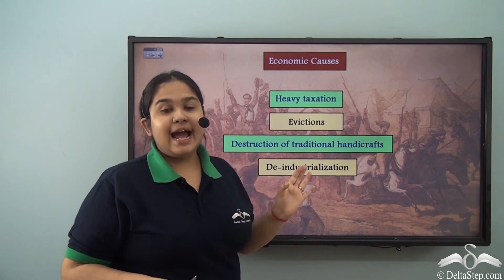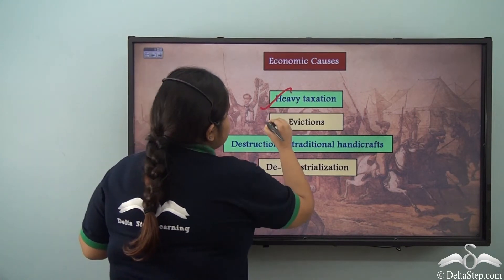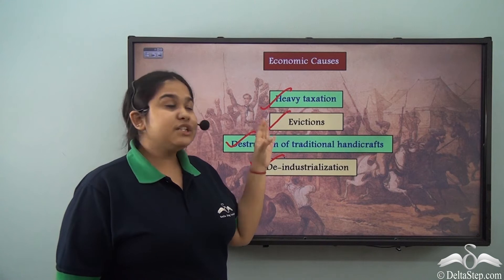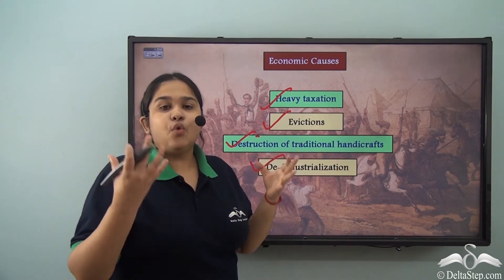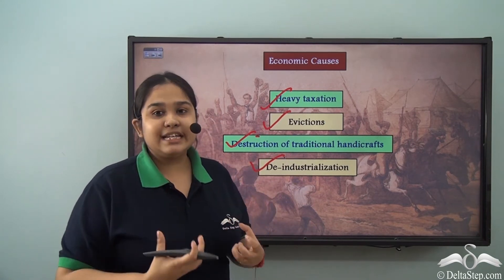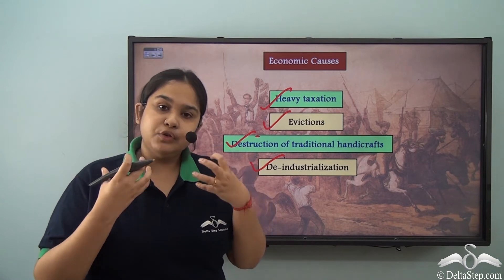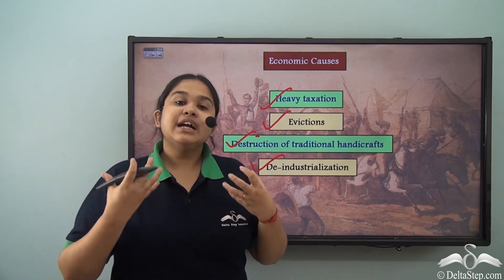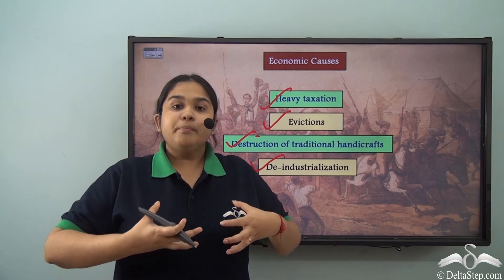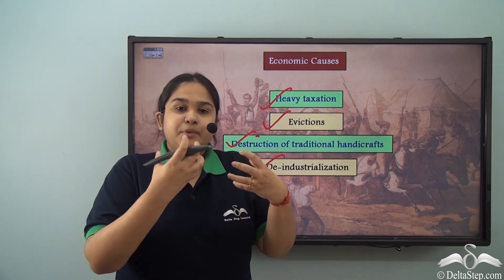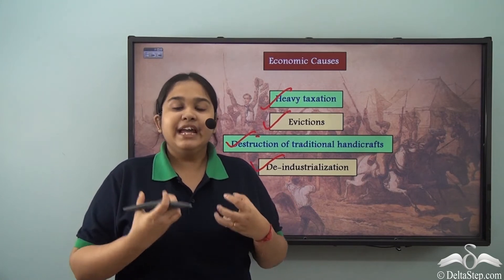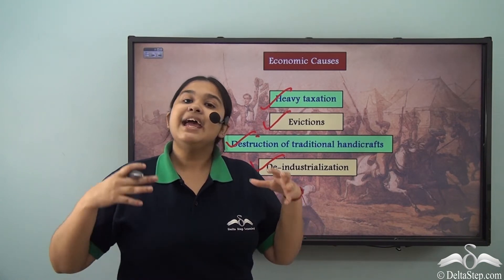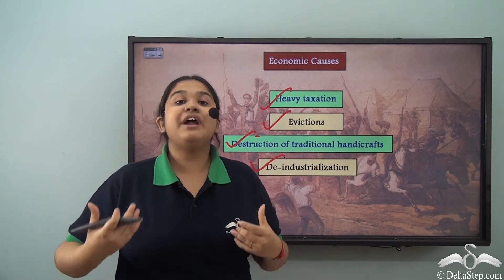These were the economic causes that angered people — from heavy taxation to illegitimate evictions, to the destruction of India's own industries and de-industrialization. The subjects of the country were all angered by the British economic policies. People now started to feel that the British were the bitter enemies of India, focused only on deriving resources rather than helping India grow.